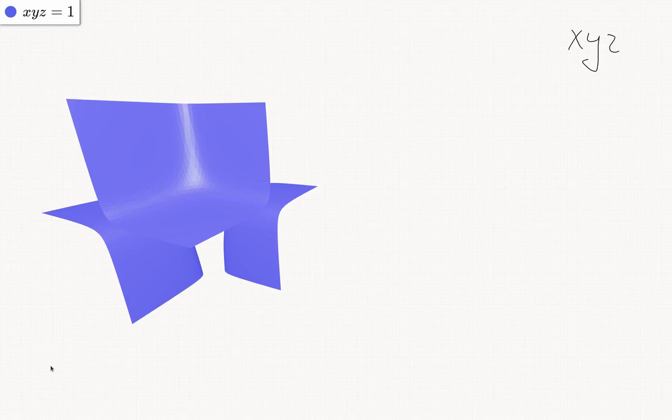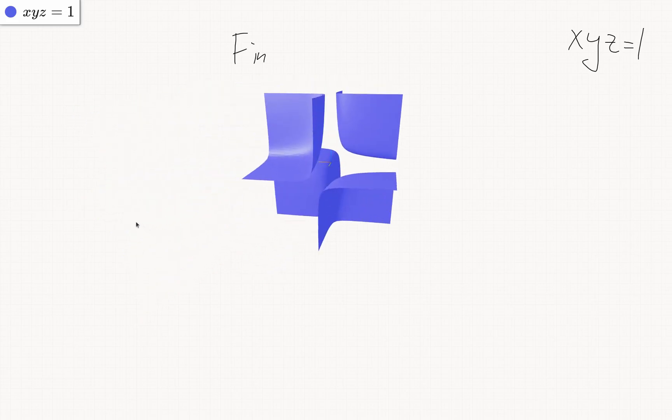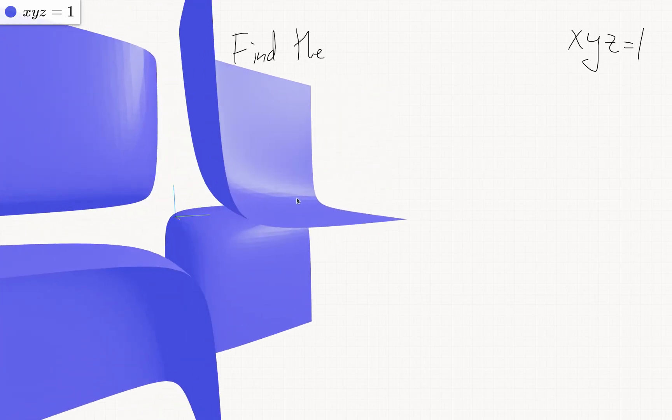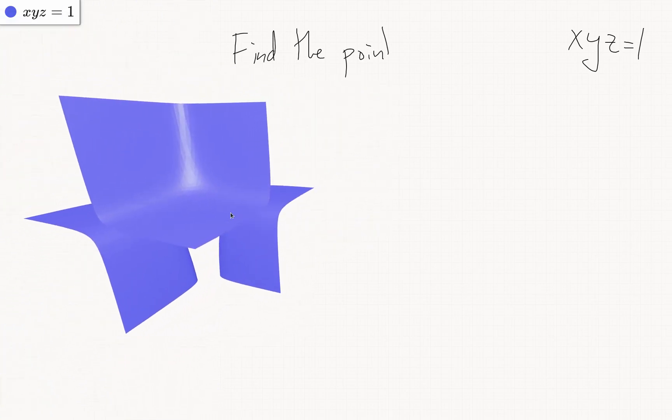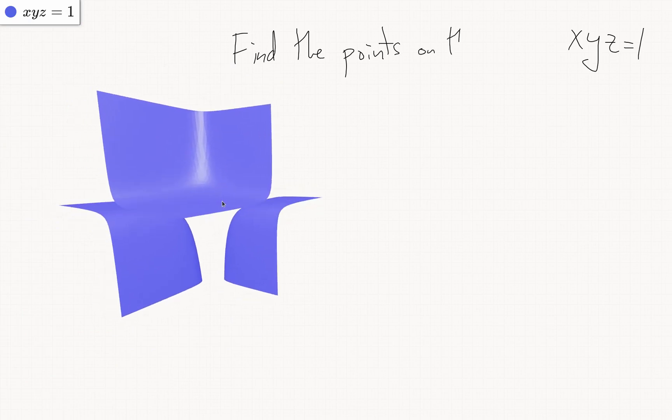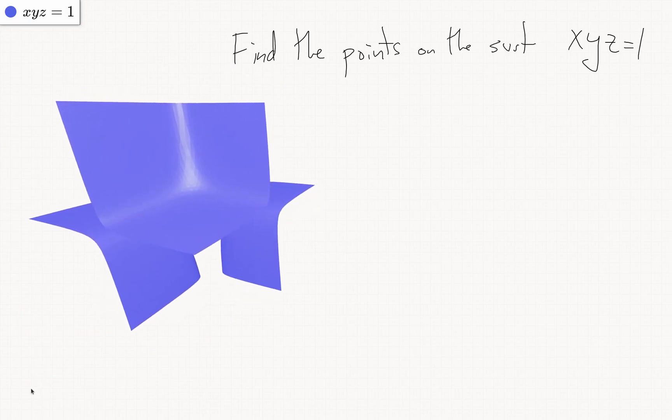If we've got the surface xyz equals 1, so that's this hyperboloid you see here, let's see how to find the points on here which are closest to the origin.